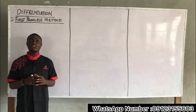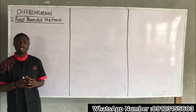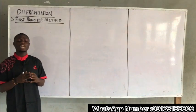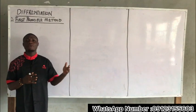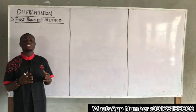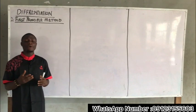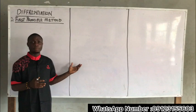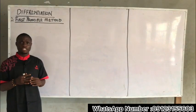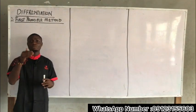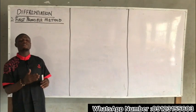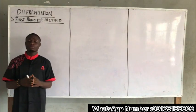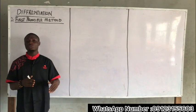In our last class, we discussed the general method of differentiation, which covered two concepts. The first task is: for the general method, multiply by the power. The second task is to subtract one from the power. That is the idea of the general method we did in our previous class. I will drop the link to the previous class in the description of this video. If you have not watched that previous video on the general method, kindly check the description of this video.